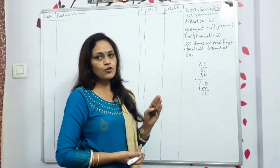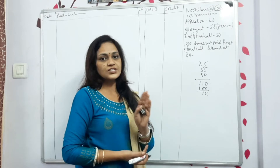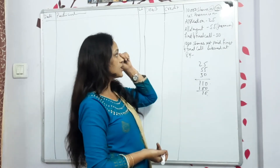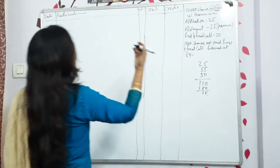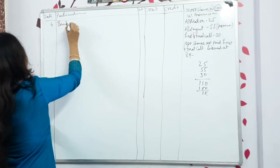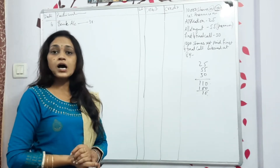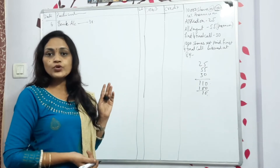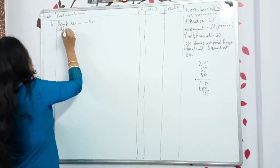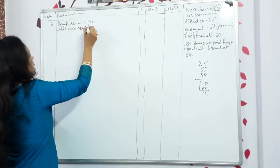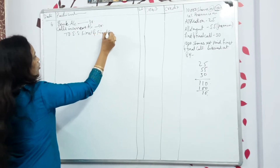Now first let me write the journal for call scenarios. For the calls due, the journal will be: Equity Share First and Final Call Account debit to Equity Share Capital Account — first and final call amount due. How many shares? 10,000 into 30 rupees, it will be 3 lakhs. Now for receiving the money, you can show the call scenarios or without call scenarios also you can write the journal. I am showing call scenarios because it will be easy for you to do the forfeiture. So now I am writing: Calls in Arrears Account debit to Equity Share First and Final Call Account.